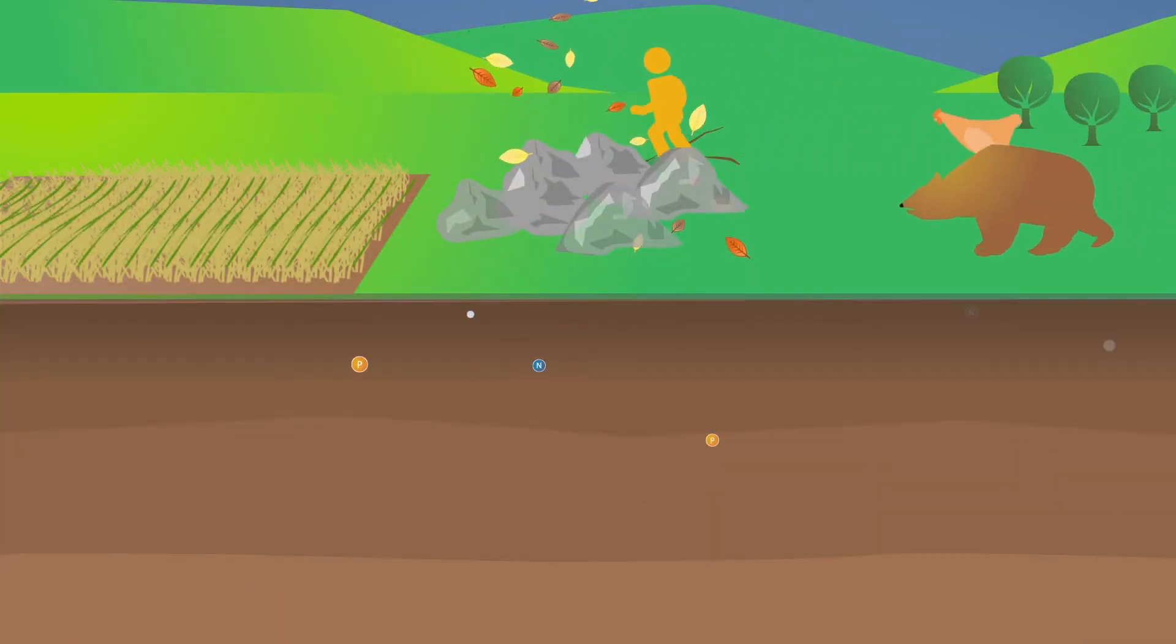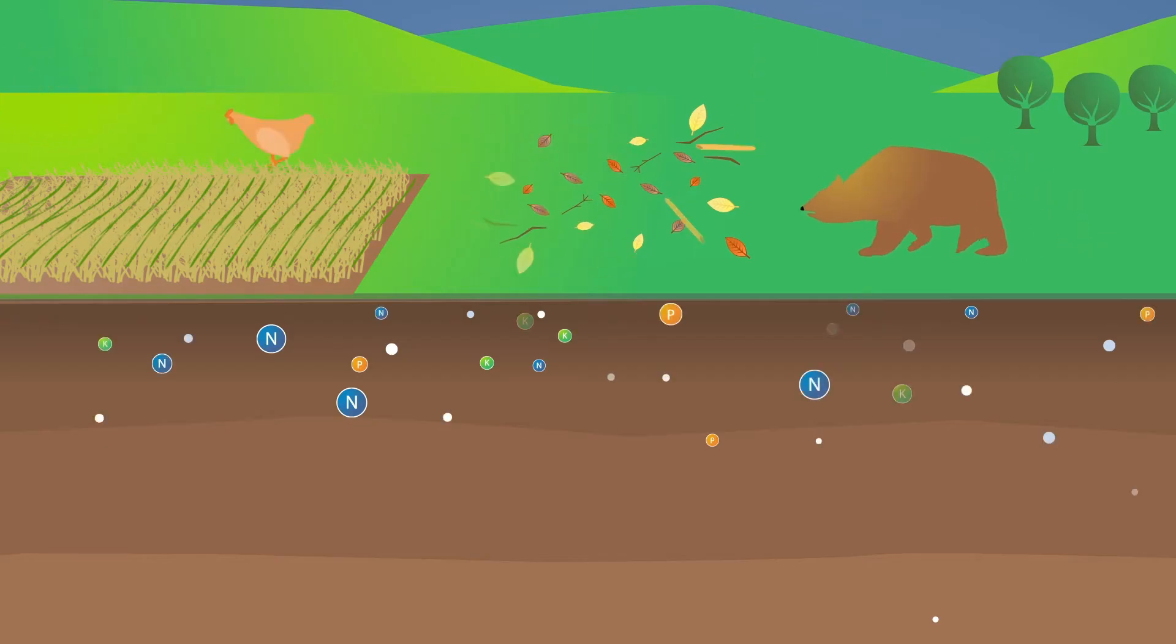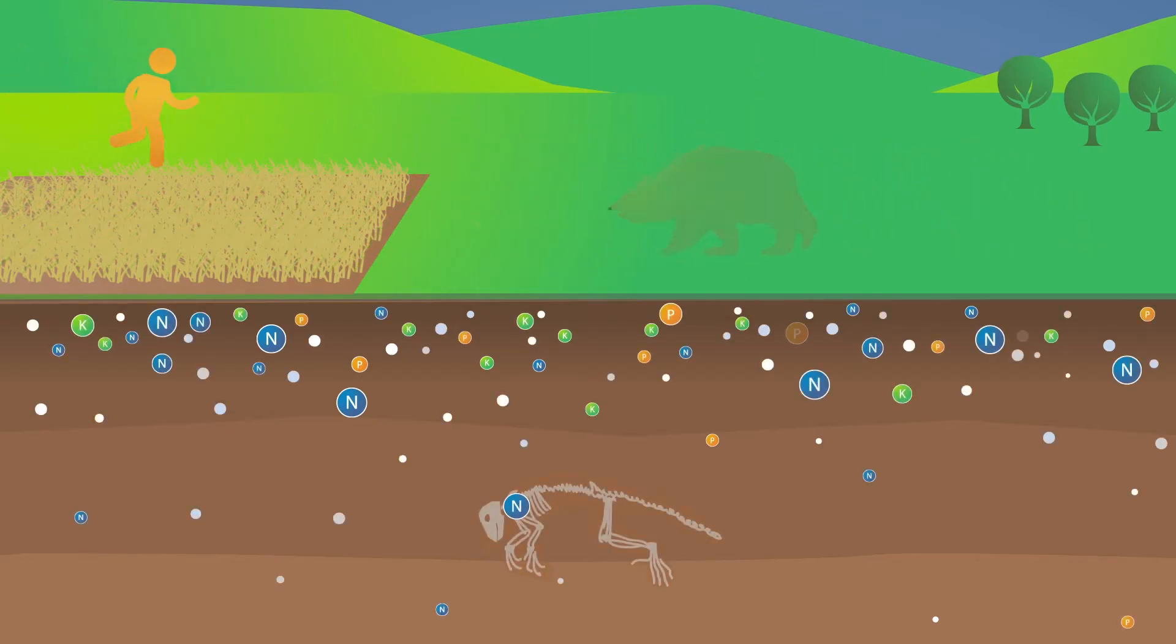It takes a long time to make soil. As rock crumbles and erodes, the minerals mix with the organic material from the remains of plants and animals that decay over time, creating nutrient-rich soil.